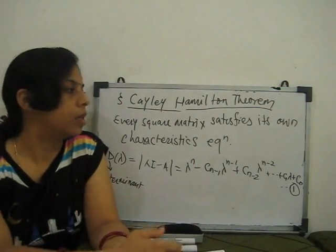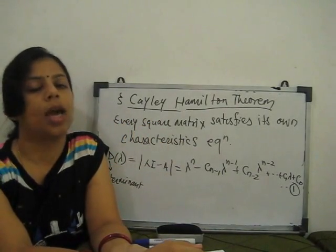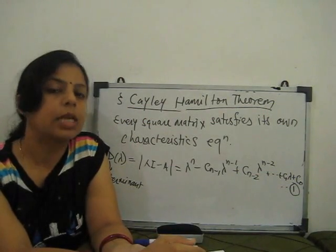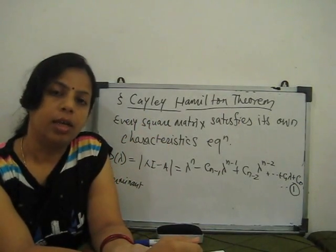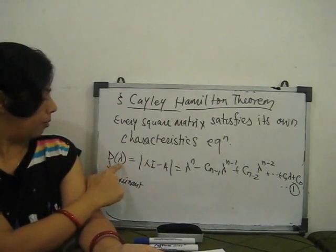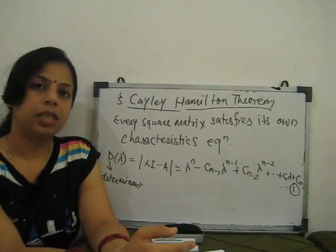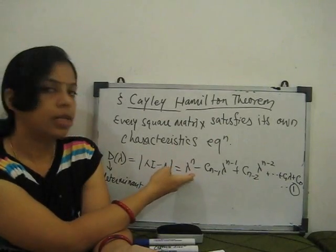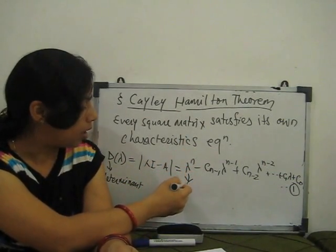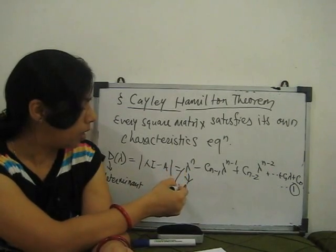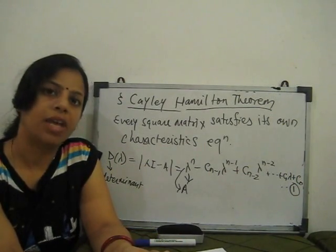What is the statement of the Cayley-Hamilton theorem? It states that every square matrix satisfies its own characteristic equation. The characteristic equation is obtained when we find eigenvalues: determinant of (A minus lambda I) equal to 0, or determinant of (lambda I minus A) equal to zero. That is the characteristic equation. Then every place lambda is replaced with A, and the matrix also satisfies that equation.